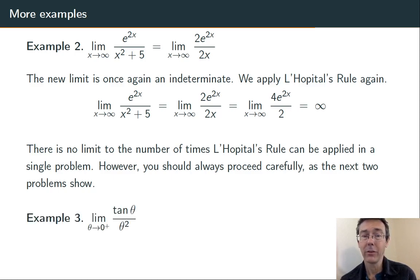Limit as theta goes to 0 from the right, tangent theta over theta squared. So, plugging in, I get 0 over 0. This is a 0 over 0 indeterminate form. L'Hopital's rule applies. I differentiate the top, differentiate the bottom, keep the limit the same.